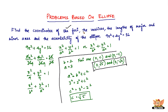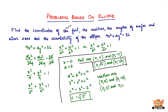Therefore, the foci are (0, √5) and (0, −√5). Next, the coordinates of the vertices. For this form, vertices are given by (0, a) and (0, −a), so substituting a = 3, the vertices are (0, 3) and (0, −3).